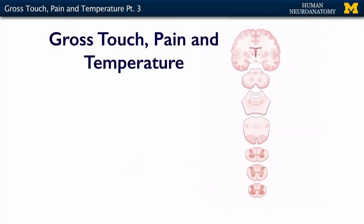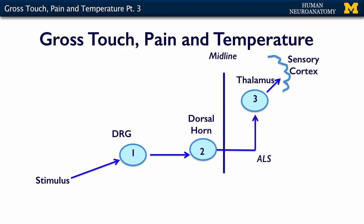The next slide has this a little more simplified, which is something I drew, so you know it's going to be simple. What you can see is, again, we have a stimulus somewhere in the periphery, which is picked up by the dorsal root ganglion neuron, which then synapses on a neuron within the dorsal horn. The axon of this neuron crosses the midline, ascends in the anterolateral system, synapses on neuron number three, which then ascends to the sensory cortex, where that sensation comes to perception. I hope that the combination of these two different types of drawings and diagrams can help you understand how gross touch, pain, and temperature are relayed from the periphery to the central nervous system.